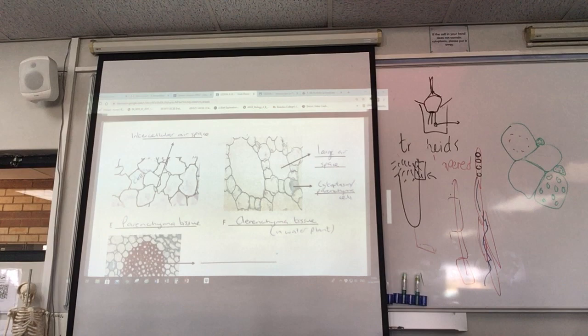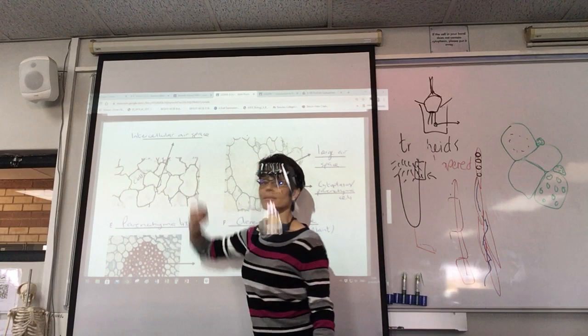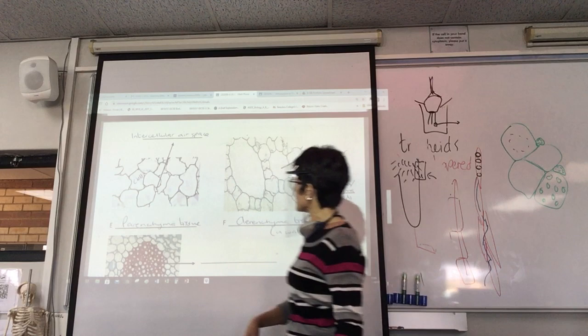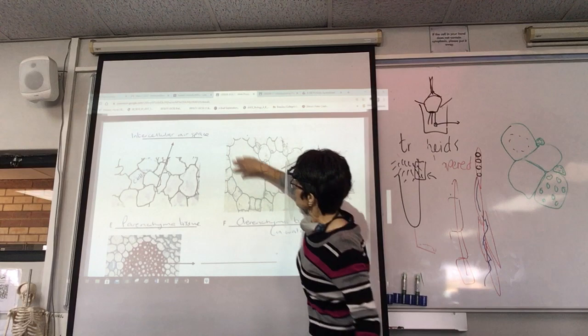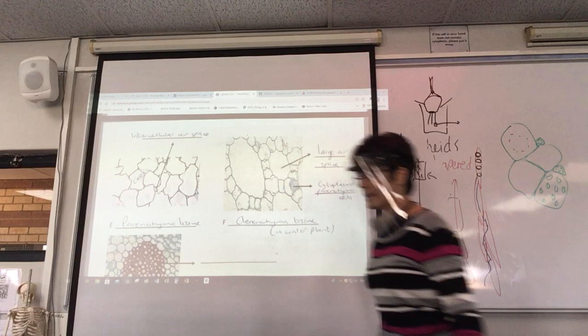The prettiest one — it looks like bubble wrap. Straight away you see air spaces. So parenchyma, thin walls, there's cytoplasm just not stained — aerenchyma in a water plant. Parenchyma with lots of huge air spaces in a water plant.